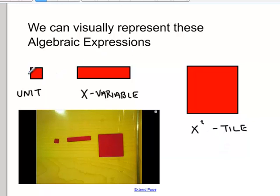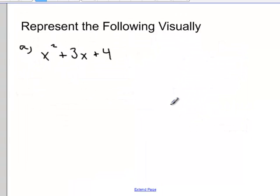So we have our unit, which is a tile that is one unit by one unit. We have a variable that is one unit by x units. And we have a square that is a length of x by x. So we can use algebra tiles to represent different algebraic expressions.